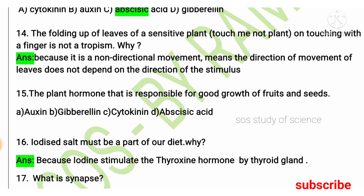The plant hormone responsible for the good growth of fruits and seeds was asked in the examination. The right answer is cytokinin, because the textbook states that cytokinin promotes cell division and is present in greater concentration in areas of rapid cell division, such as in fruits and seeds.